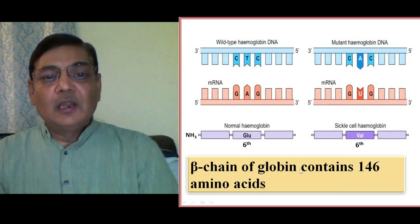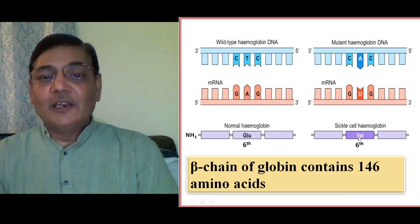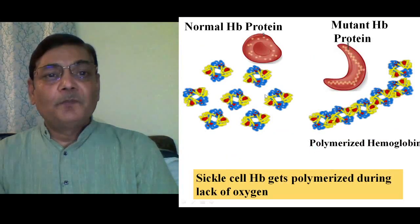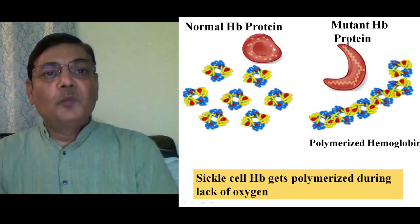In the beta chain of globin there are a total of 146 amino acids. The only change is at the sixth position — in the mutated condition it is valine instead of glutamate — and this replacement causes such a severe disease. In a normal RBC, which is round and biconcave, hemoglobin is present inside it. Two alpha and two beta globin proteins are arranged in such a manner that the RBC maintains its normal shape.